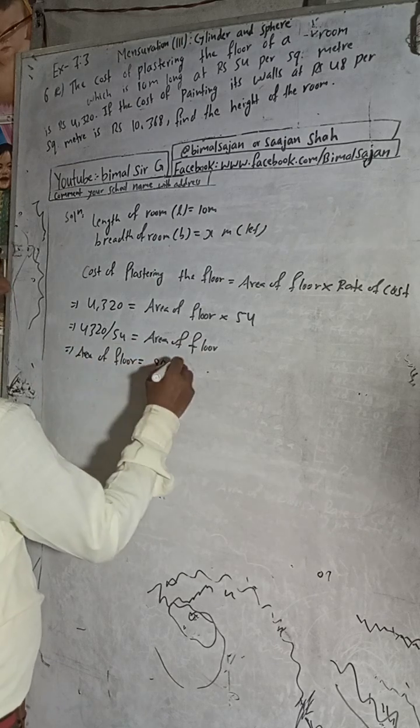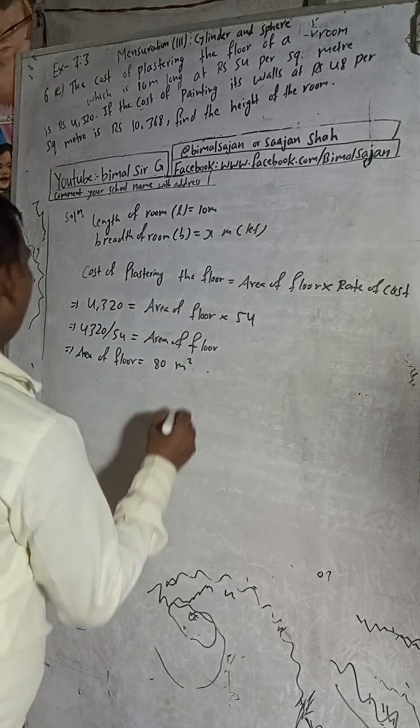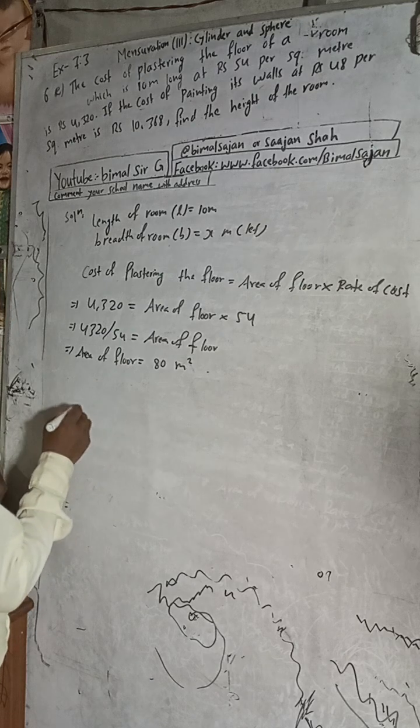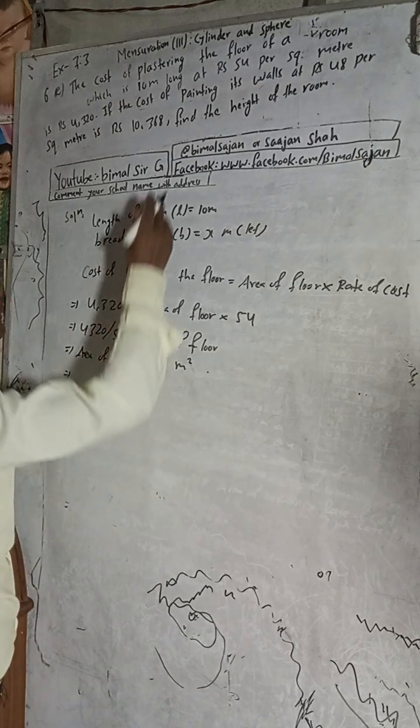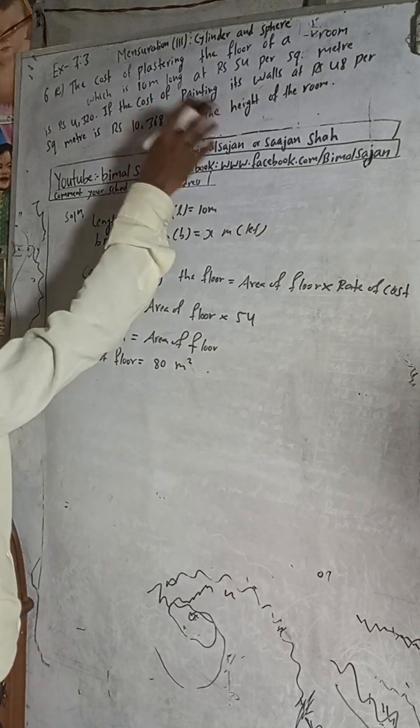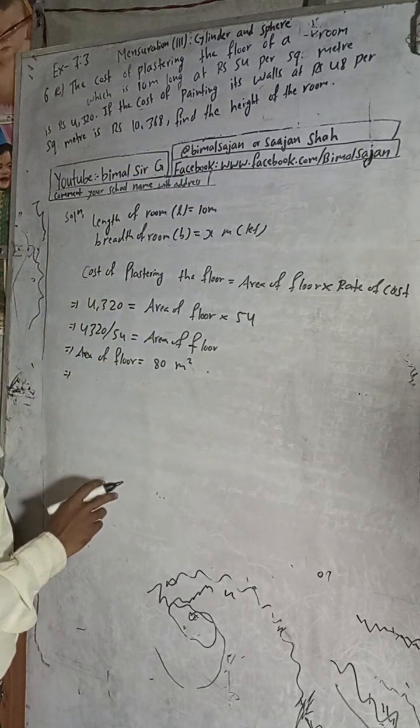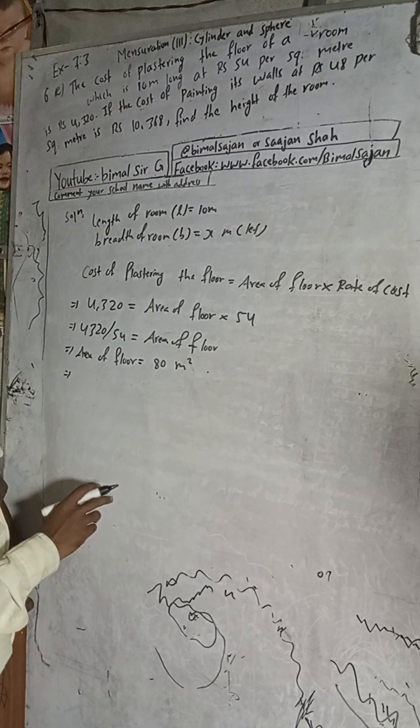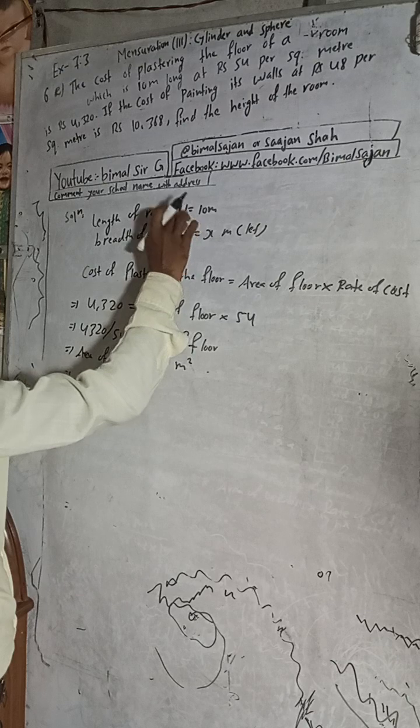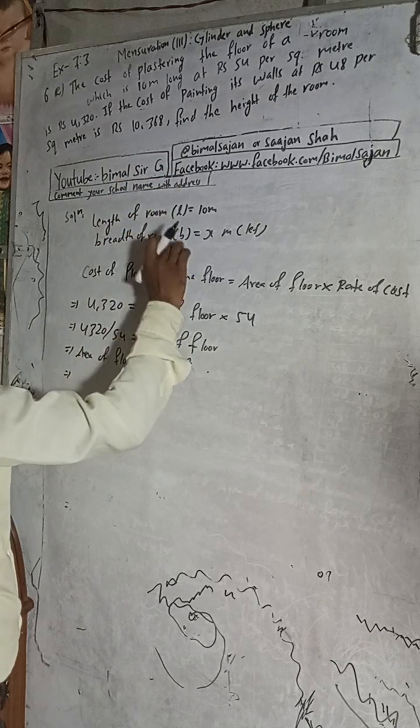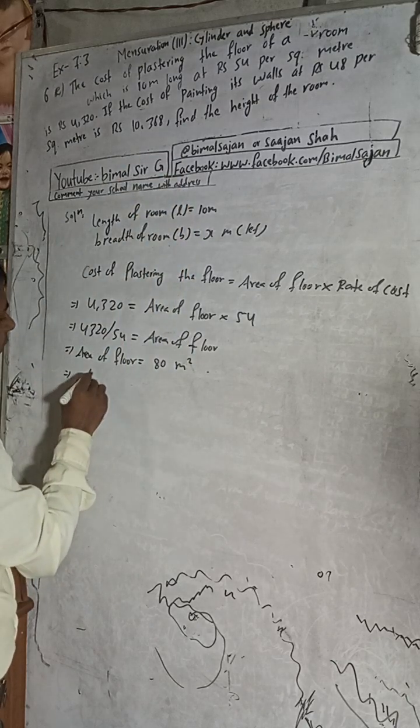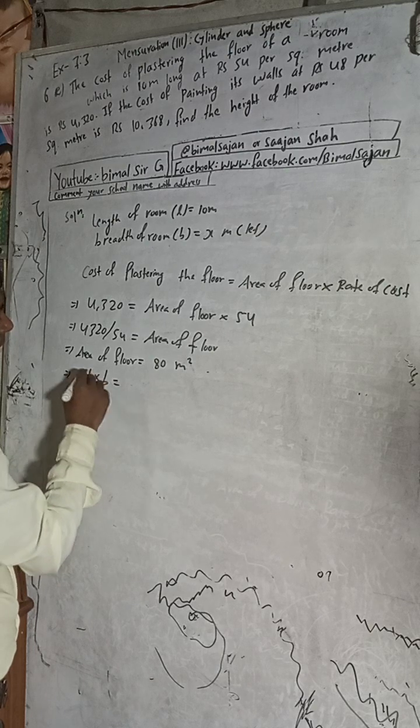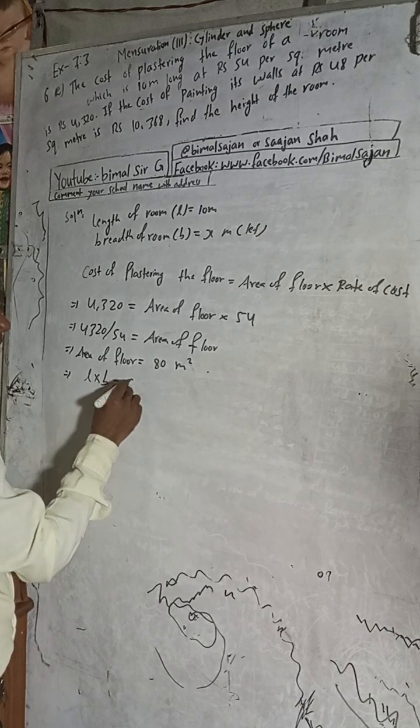Area of floor is 4320 divide by 54, we get 80 meter square. Now what is the formula for area of floor? This length is only given that means this is a rectangle type, so L into B is equal to 80.